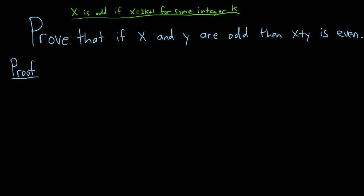By the way, this goes both ways. If x equals 2k plus 1 for some integer k, then x is also odd. Even though I only wrote if, it does go both ways. It is an if and only if. That is because this is a definition. Definitions are always if and only if statements by default.